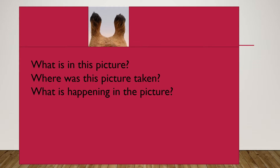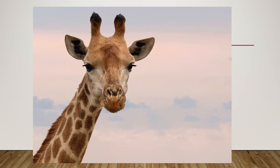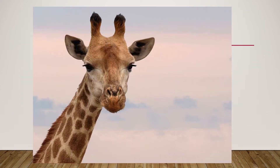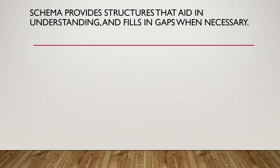What is in that picture? Where was it taken? What is happening? Five, four, three, two, one. Did you guess it was a giraffe? The second question — where was this picture taken? You might have guessed Africa, others might have said the zoo. Why? It's your schema filling in the gaps. If you associate the giraffe with Africa, you guessed Africa. If you associate it with the zoo, you said the zoo.